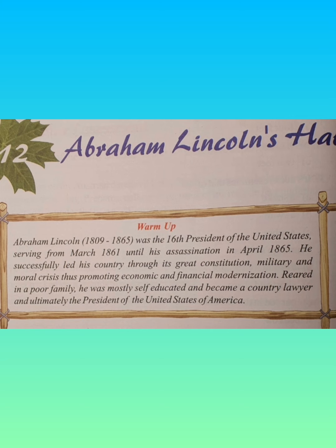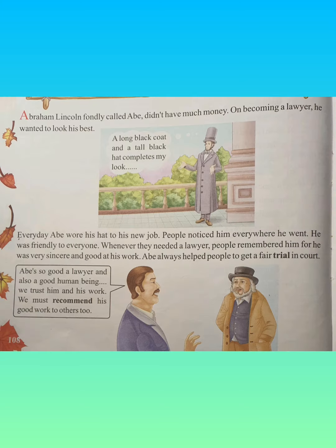Reared in a poor family, he was mostly self-educated and became a country lawyer and ultimately the president of the United States of America. Underline reared — reared means he was brought up. He was brought up in a poor family and was mostly self-educated, meaning he didn't get much time to go to school and studied on his own. Underline country lawyer — country lawyer means a lawyer who practiced in a rural area or a small town. Underline ultimately — ultimately means finally.